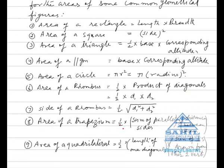Number 8: area of a trapezium is 1/2 into sum of parallel sides into distance between them. Number 9: area of a quadrilateral is equal to 1/2 into length of one diagonal into sum of perpendiculars drawn from the other two vertices upon this diagonal.